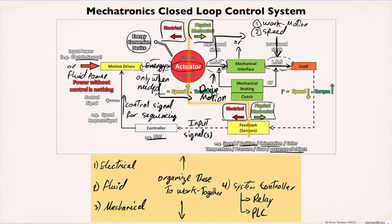The feedback input devices can be located anywhere on the system. According to their operation, some are placed on the body of the actuator such as position sensors. Some are placed on the actuator shaft like speed sensors. Some are placed on the mechanical interface or the system such as positioning sensors, orientation sensors, part presence sensors, height measurement, and many more.